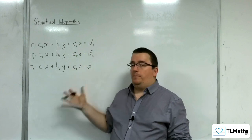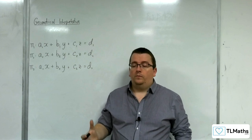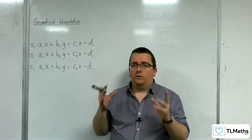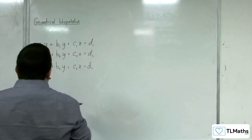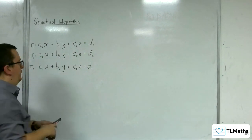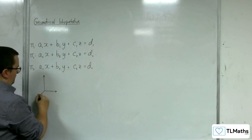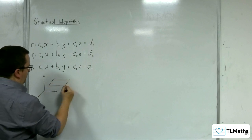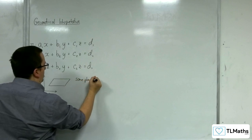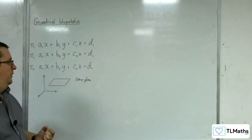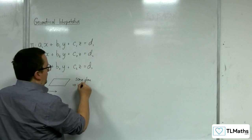Now we have three planes. Let's think about what these three planes are going to look like - all the different ways that they can interact with one another. Just as we have with two planes, there is the trivial case where all three planes are the same. So we don't have three distinct planes; all three are actually the same. We've got infinitely many solutions.